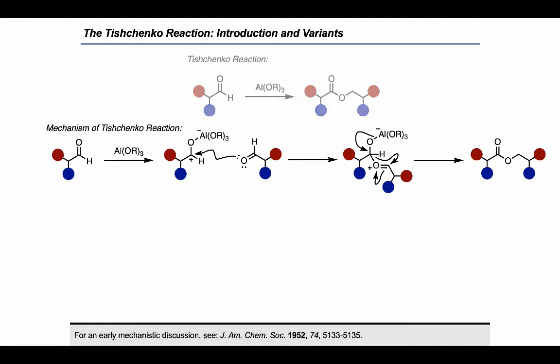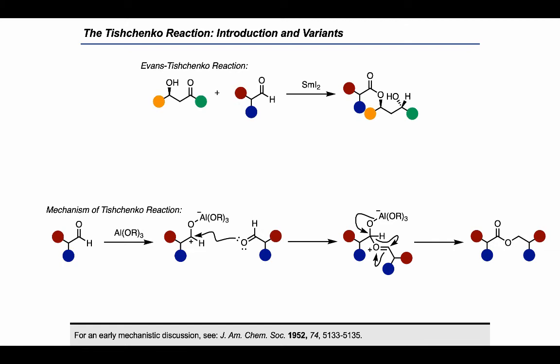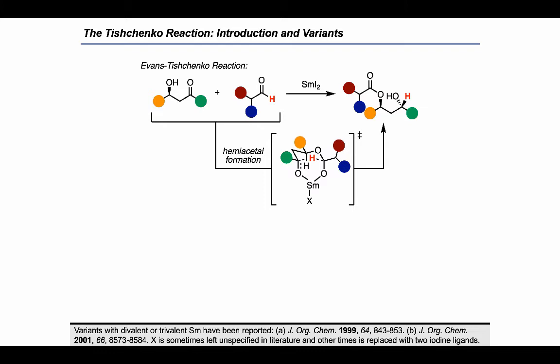Here I want to turn our attention to an important variant of the Tyshenko reaction, which is the Evans-Tyshenko reaction. In this variant, we start from a beta-hydroxyketone or aldehyde, and upon treatment with samarium diiodide, it's possible to reach the product shown, where the alcohol has been acylated and the carbonyl attached to the green ball has been reduced. This is understood to proceed by in-situ formation of a hemiacetal, which can undergo an intramolecular hydride transfer through the transition state shown, generating an anti-1,3-diol motif in the product.